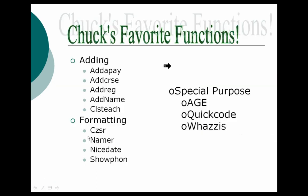My favorite functions: there are over 100 functions, but some basic ones that most everyone will find use for are your add functions — AddPay, AddCourse, AddReg, AddName, and AddTeach. As you might guess, these come from the pay table, the class, the registration, the name, and teacher file. What these allow you to do is that if you're in a report and you need a field from the registration table that you can't find in the native fields, you can use one of these add functions — I call them gopher functions — to go get a field from the registration record, as long as you have the course number and ID number of the record you want.